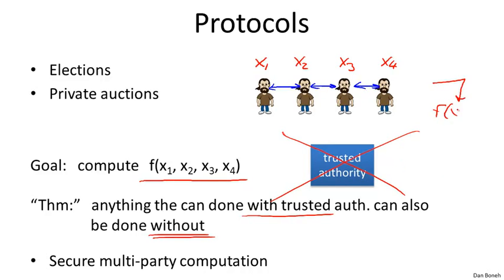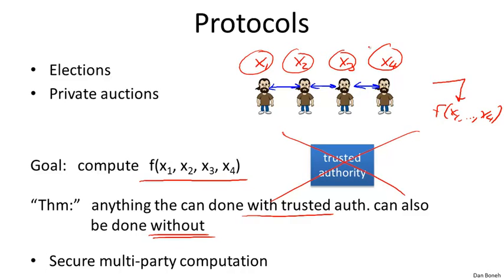Instead, the parties talk to one another using a protocol such that at the end, the value of the function becomes known to everybody, and yet nothing other than the value of the function is revealed — individual inputs remain secret with no authority involved. This is a fairly general and surprising result, and towards the end of the class we'll see how to make it happen.